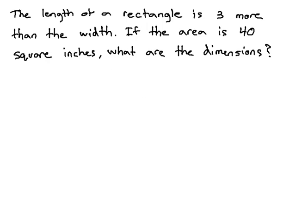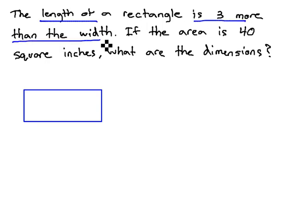So, to help us get a better idea of what's going on, let's draw this rectangle and let's give it some measurements. We're told that the length is three more than the width. So, the width, that's going to be our small side, let's call it x.